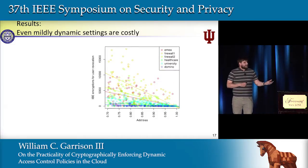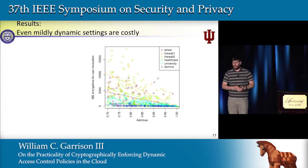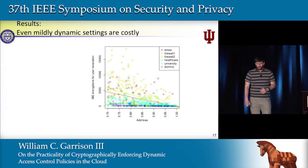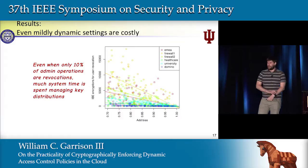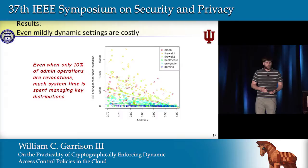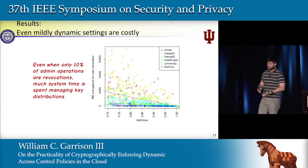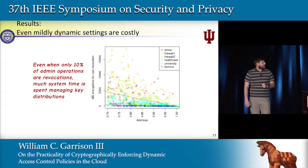We then manipulated the administrative behavior, varying those parameters to look at different frequencies of revocation and decide how dynamic a system needed to be before this posed a problem. We found that even at 10%—even if only 10% of the administrator's actions are toward revocation—the costs are going to become a problem. We've tried to engineer this system to be as feasible as possible, sometimes at the expense of relaxing our security model, but even only 10% revocations makes this likely impractical.